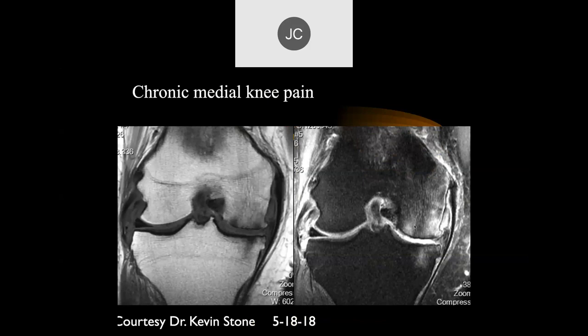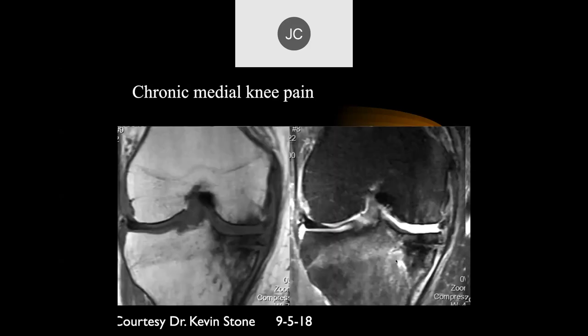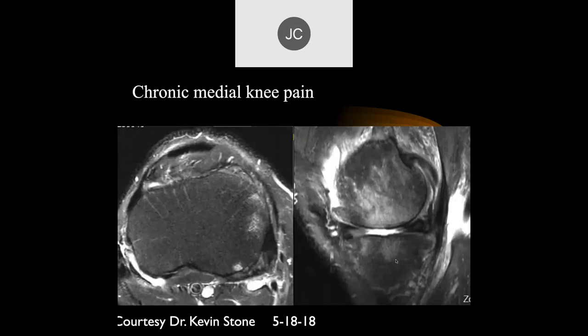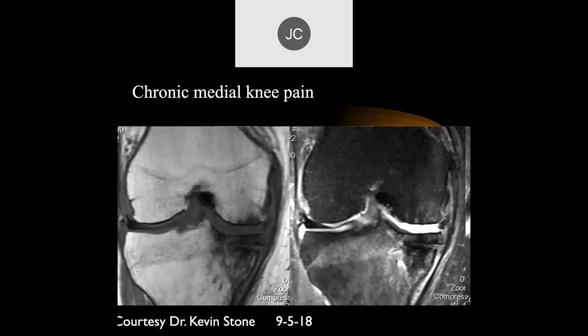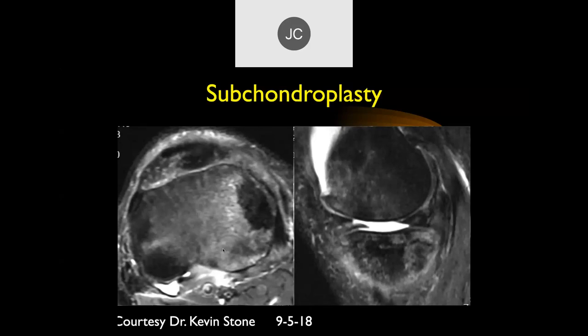Here's a case of predominantly chronic, long-standing grade 4 chondromalacia — full thickness defects of articular cartilage over large areas of the medial compartment with subchondral granulation tissue, bone edema, and irregularity of the subchondral bone. This was on 5-18-18. Four months later, it looks like pretty extensive grade 4 chondromalacia and almost looks like a subchondral fracture — and this is called a subchondroplasty.